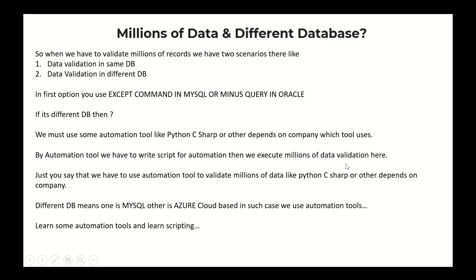In the interview, you must tell confidently about these two scenarios. If the interviewer asks which automation tool, just say Python or C-Sharp — we write the scripts there. Just say we use automation tools to validate millions of data like Python, C-Sharp, or others depending on the company.